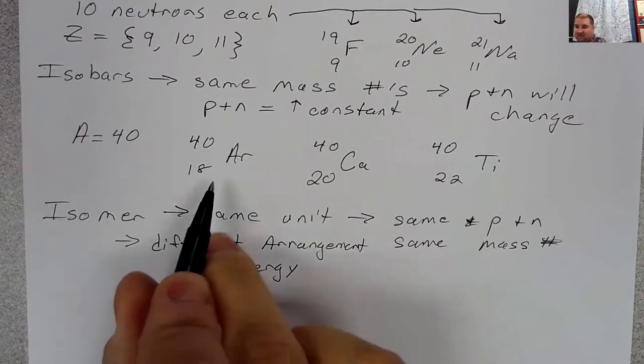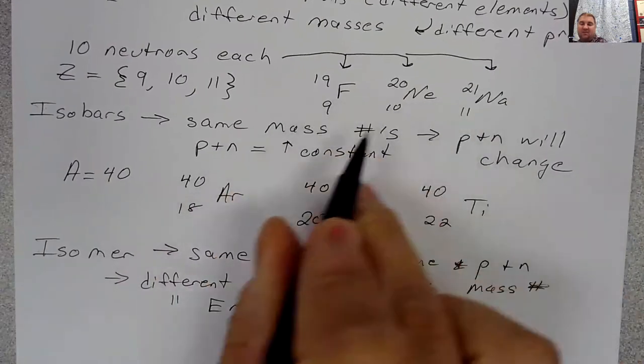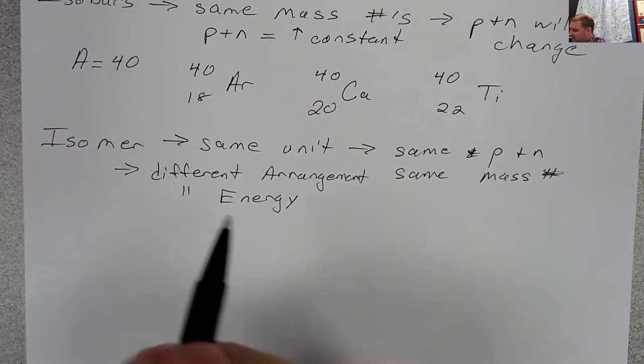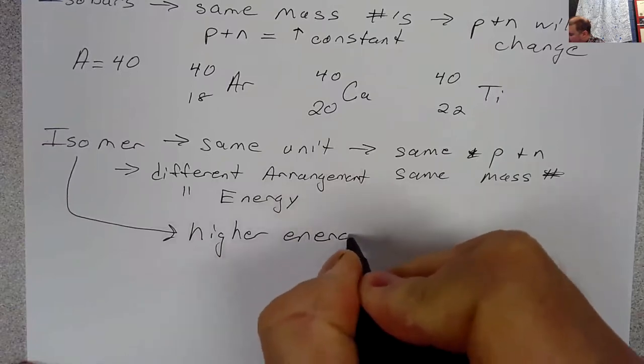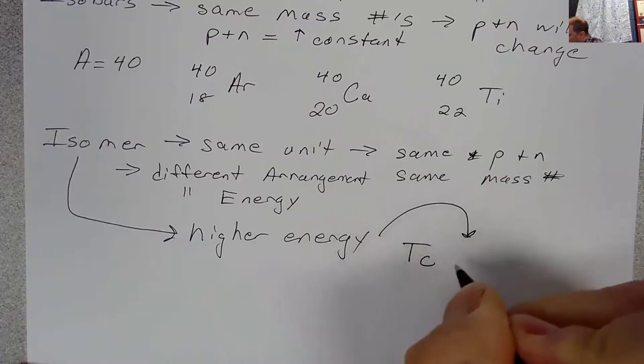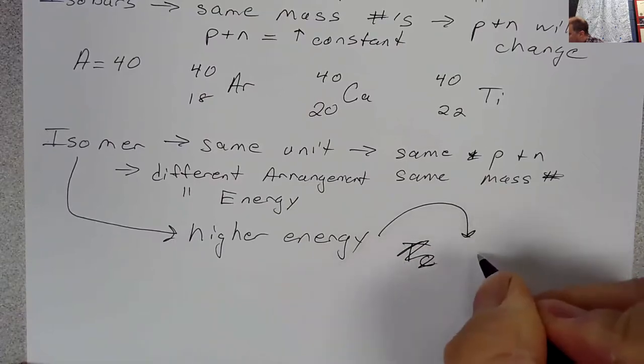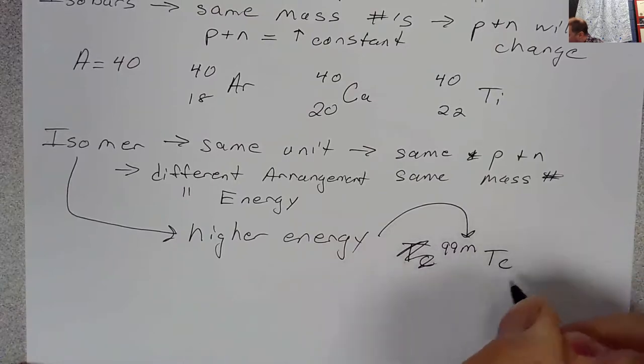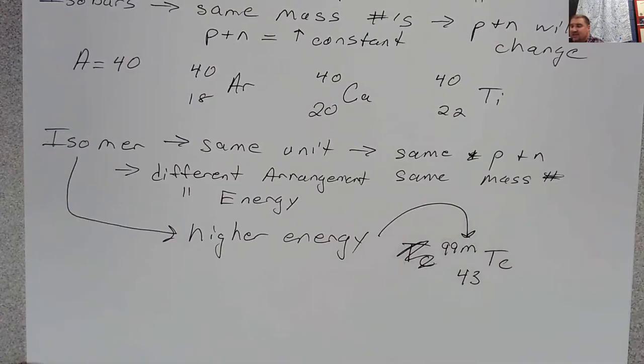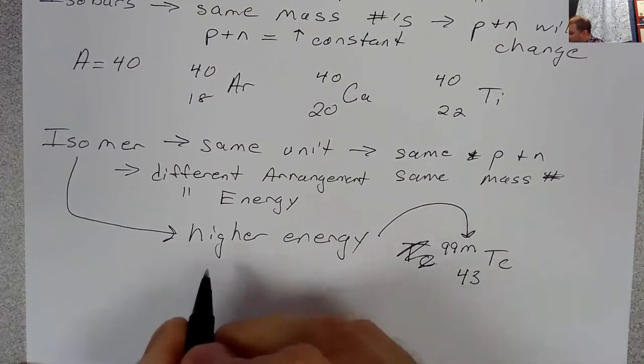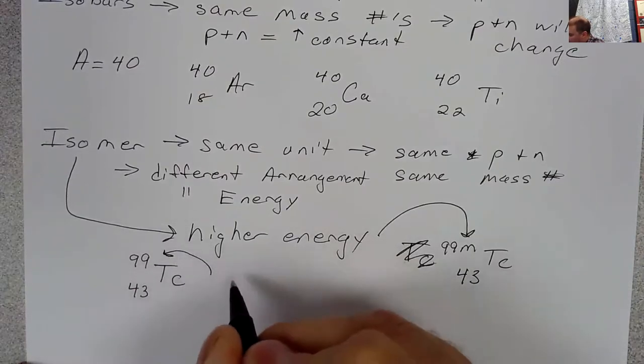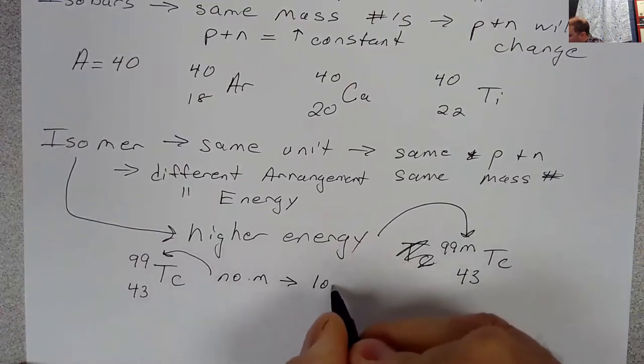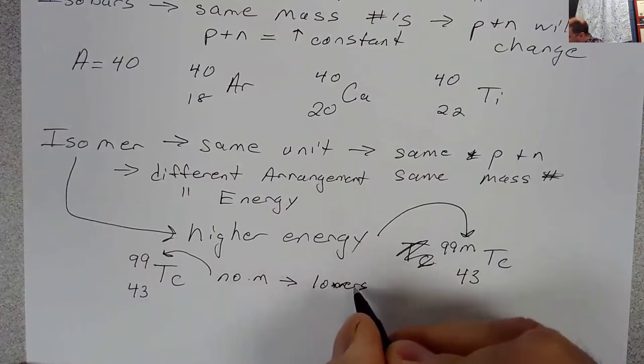And so we don't see this in terms of changing any of these numbers, atomic numbers or mass numbers with the symbols. What we see here is we see for higher energy, we see a symbol on the atomic symbol of this M. So a great example of this would be technetium 99 M, higher energy, whereas technetium 99 with no M would be lowest energy.